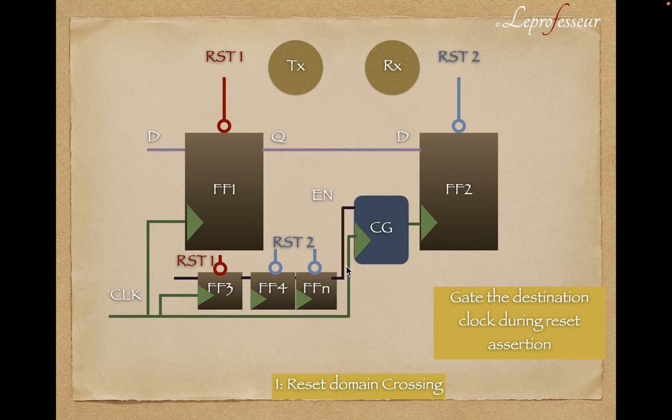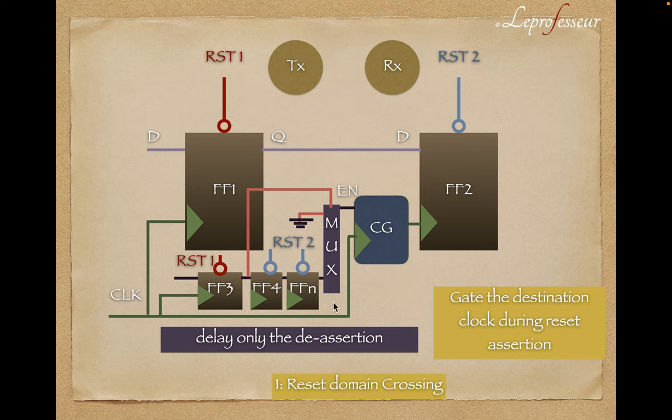So that means that we can have some sort of a multiplexer to delay only the de-assertion. That will delay the de-assertion, and assertion we don't have to worry about. It is asynchronously asserted. So that looks like a good solution for reset domain crossing issues.